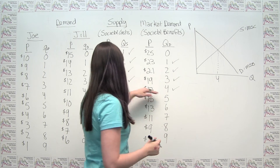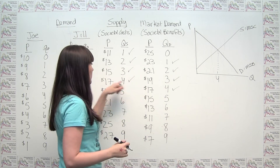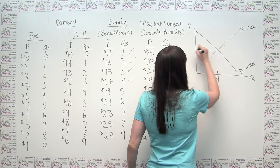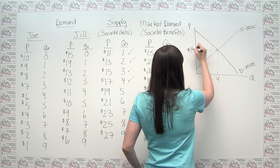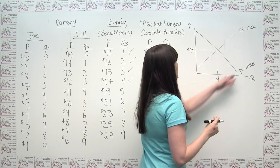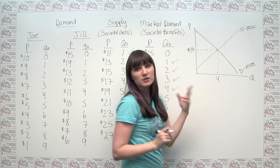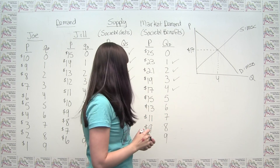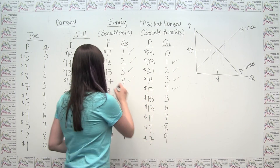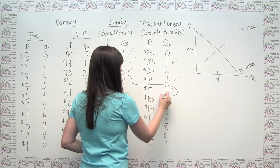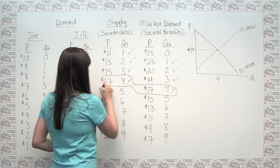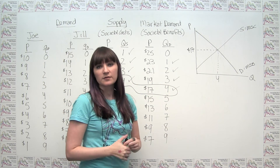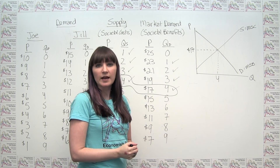We can also put a price on that — the associated price is $17. From the supply-and-demand graph, we can see that a quantity of four acres is the size of park that is, in fact, optimal for this very small society.